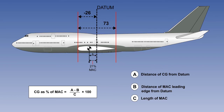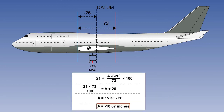Here is another example using the same percentage aerodynamic chord formula, but this time we are required to find distance A. Notice that the aeroplane looks the same as our previous example, but the datum is changed — remember the datum is set by the manufacturer. The values given are B, which is minus 26 inches, C, which is 73 inches, and the percentage Mean Aerodynamic Chord is 21%. The distance of the centre of gravity from the datum, A, is the unknown value to be calculated. The values are input into the formula to find A, and when resolved show that the centre of gravity is 10.67 inches forward of the datum. Notice that because B is forward of the datum it is a minus, and therefore it is advisable to put it in brackets before applying the minus sign after A.